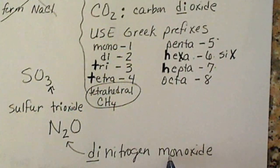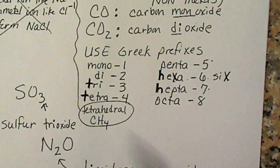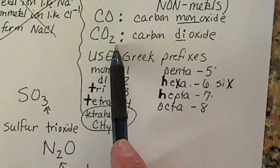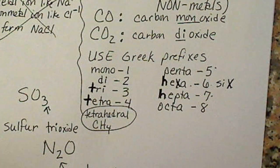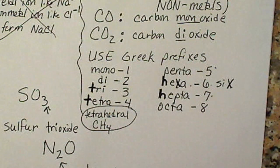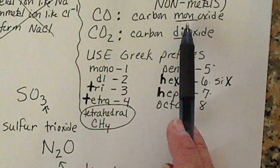We always say how many of the second atom there are. If we just look back to what we already know, that's basically a template for us to remind us to use the Greek prefixes, as well as state how many of the second atom there are.